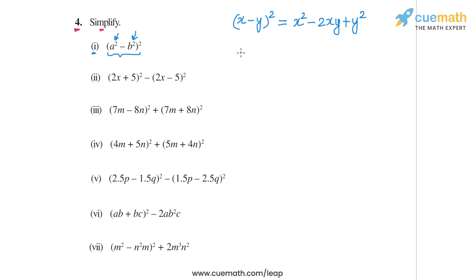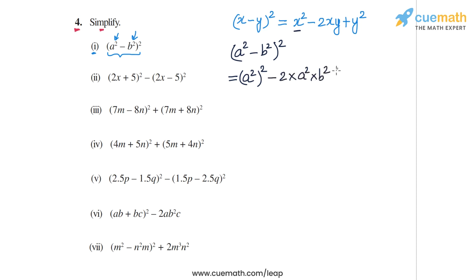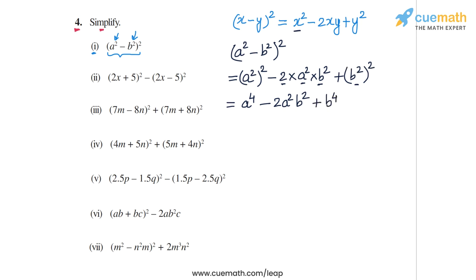Applying this identity to (a² - b²)², we get the square of a², which is a⁴, then minus 2 times a² times b², giving -2a²b², and then the square of b², which is b⁴.